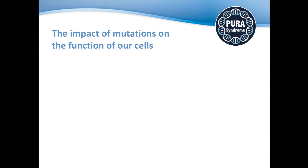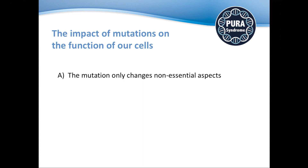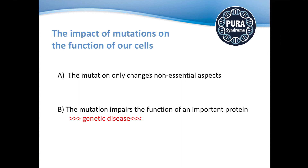What impact could such a mutation have on a protein? There are two options. The first is that the gene hit is not important — the protein doesn't have any essential function, so a mutation doesn't cause major problems and you would have no disease. The second option, which is what PURA syndrome is about, is when you have a mutation that impairs the function of an important protein. PURA Alpha — the protein, not the gene — is obviously important, and that means a mutation in the PURA gene causes a defect in the PURA Alpha protein, and the result is PURA syndrome.